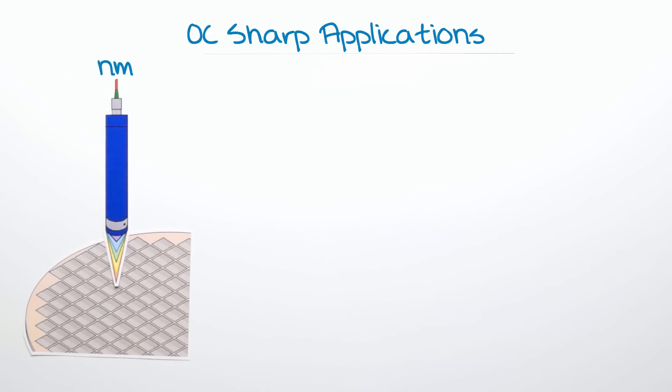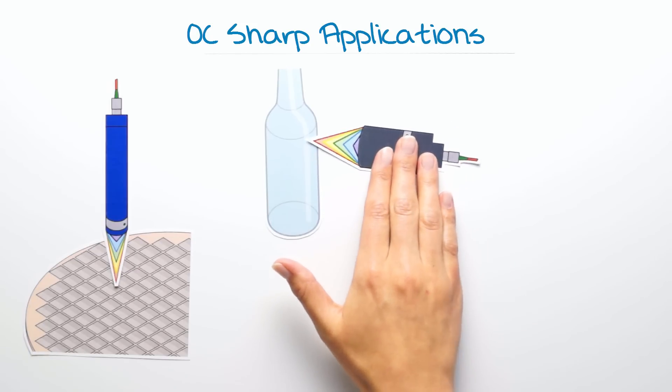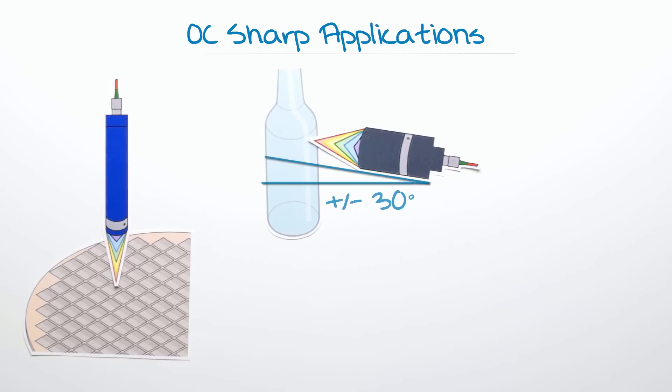Speed and high tilt angles are of the essence when it comes to non-contact measurement of wall thickness and roundness of glass containers. An ideal application for chromatic thickness measurement with a tilt angle of plus minus 30 degrees.